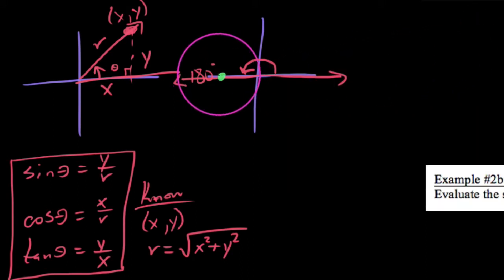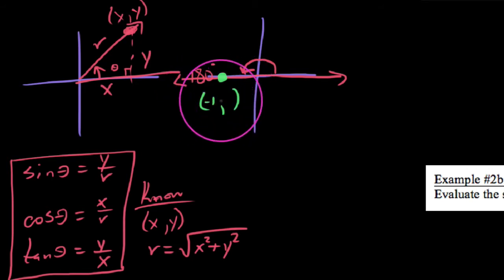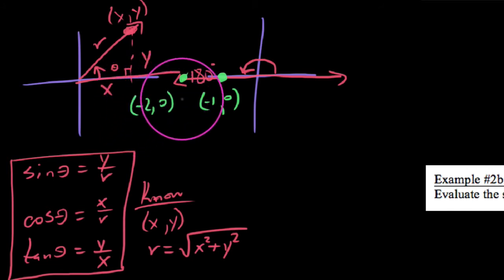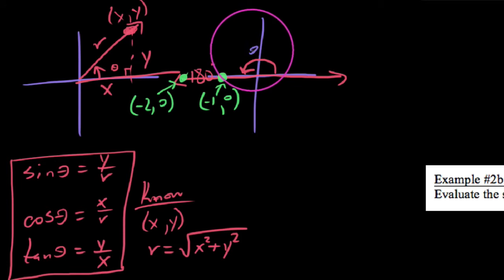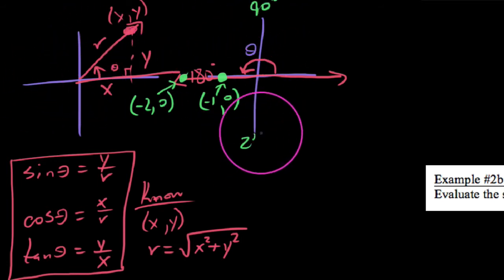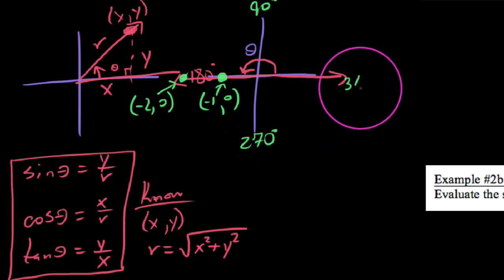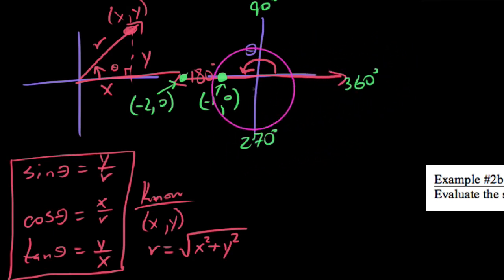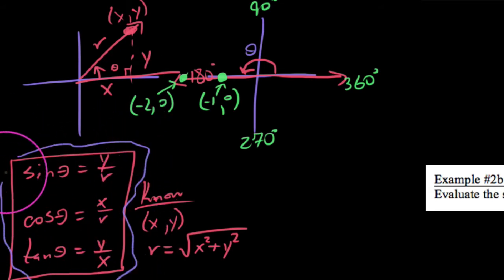We could choose the point negative one comma zero. Could I have chosen negative two comma zero? It is certainly also on the terminal side. When it comes to evaluating the trig functions of what we call the quadrantal angles — things like 90, 180, 270, 360, or any angle that falls on an axis — we're going to use the same definitions we used before.